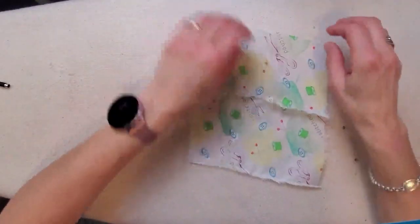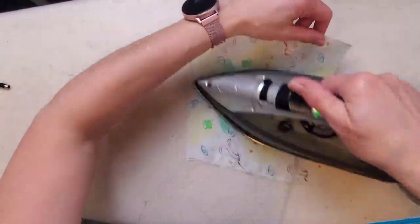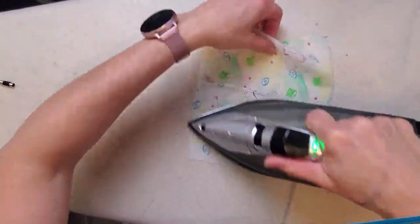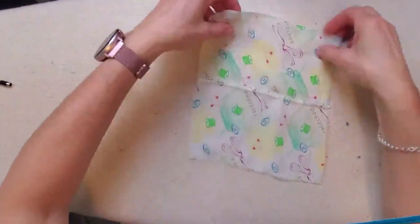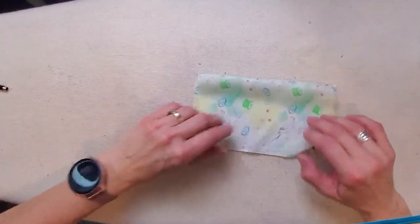Take your seam over to the iron and press it to one side. That's under pressing when you press it to one side, and now turn it.